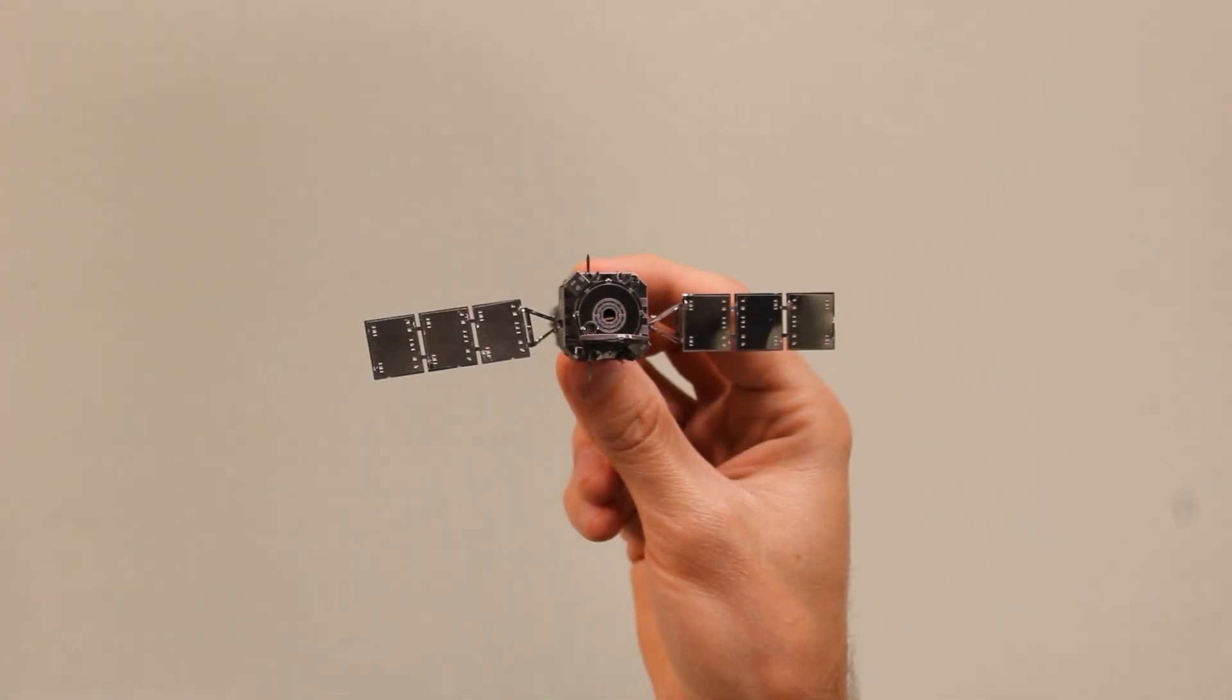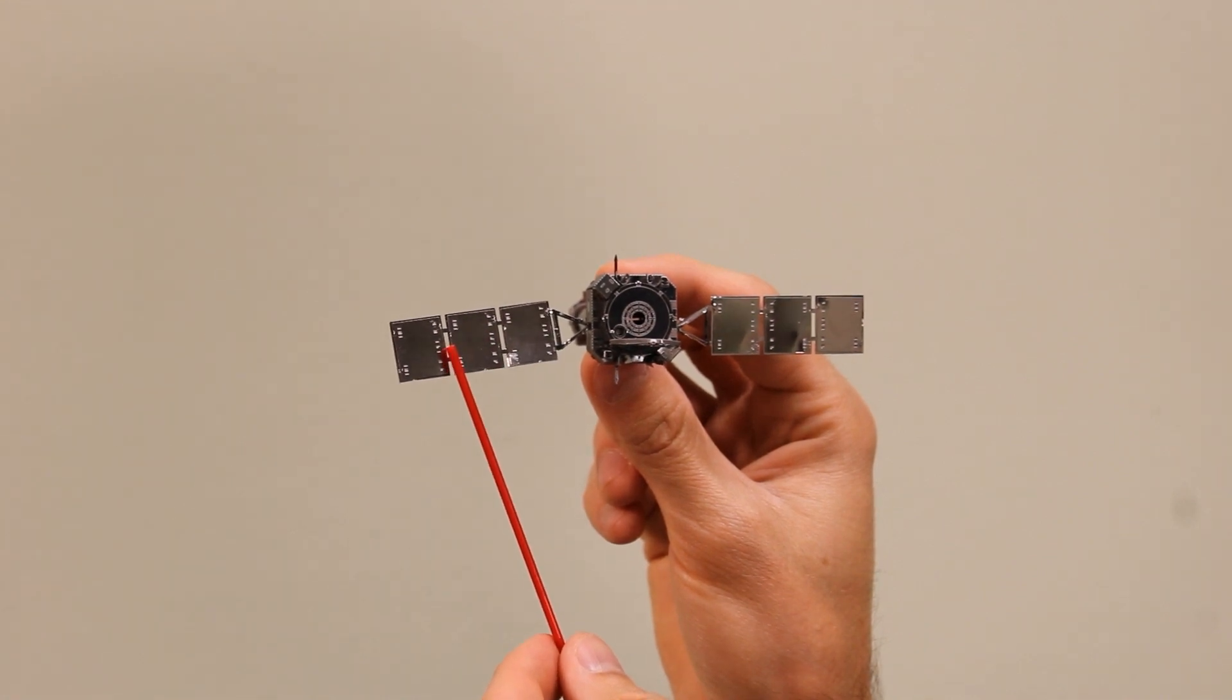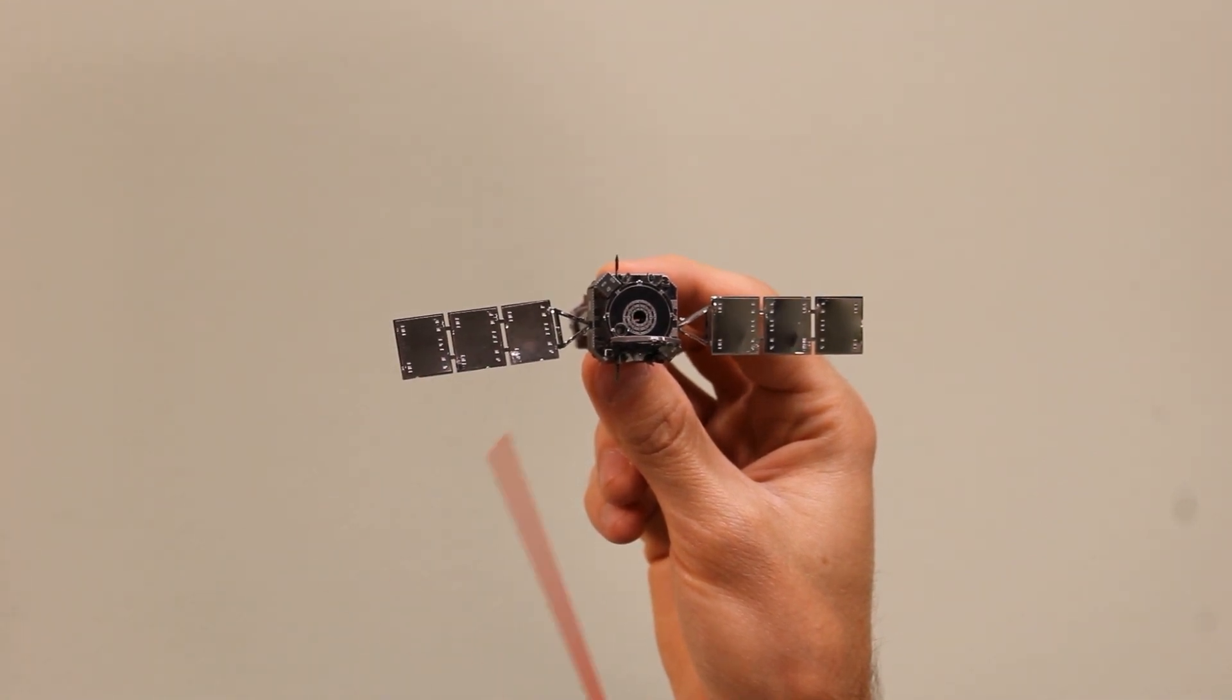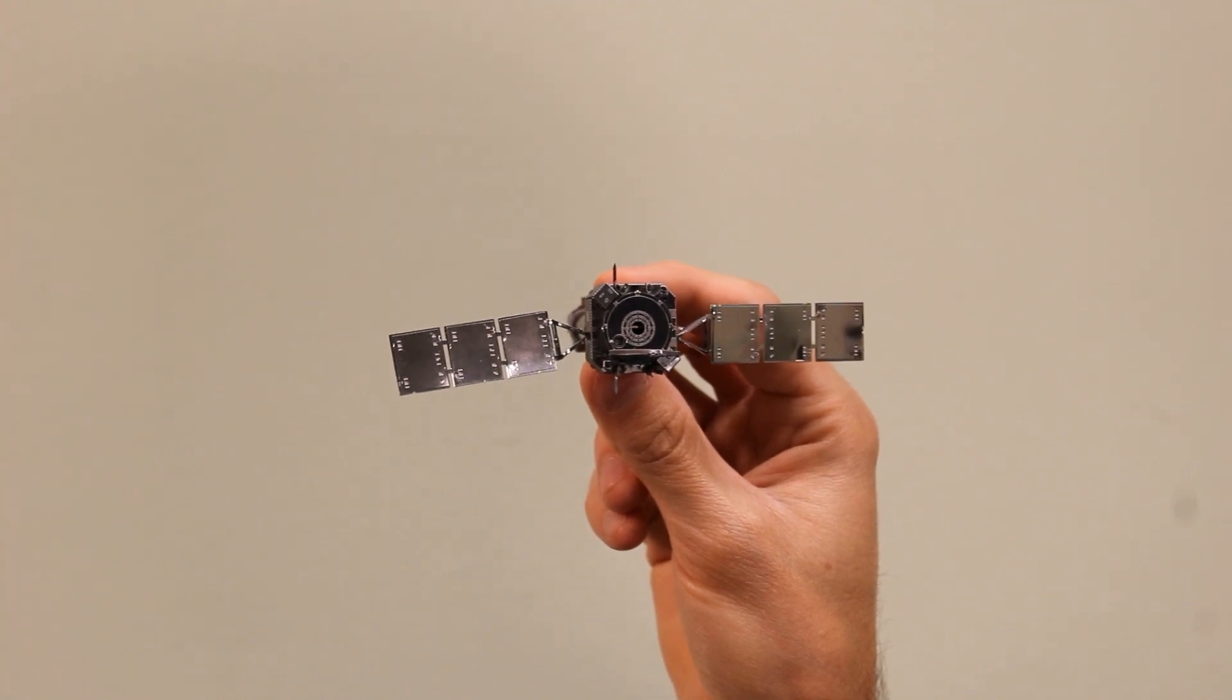Okay, so what are hinge springs and how do they help pivot a solar array into place via the hinge mechanism? Let's take a look at a real hinge spring to find out.